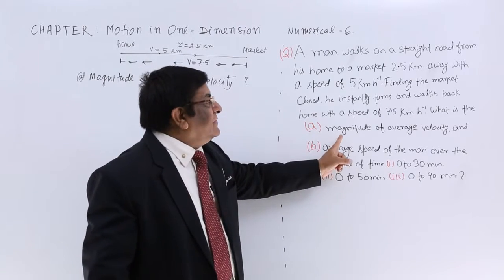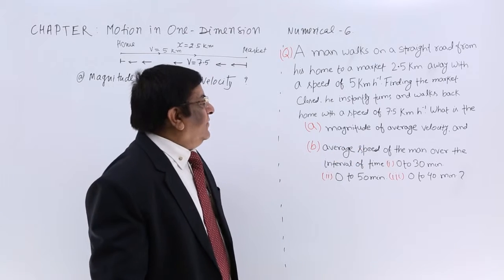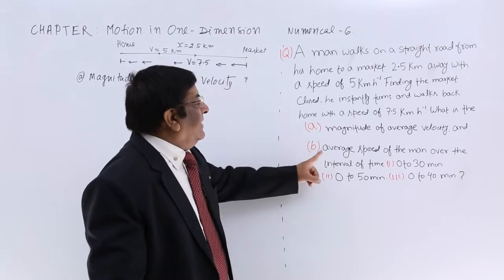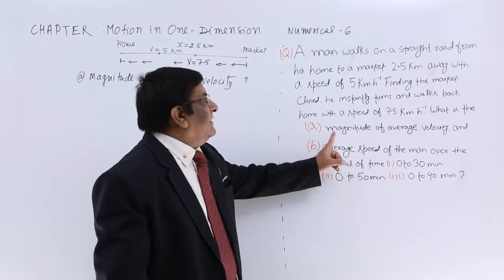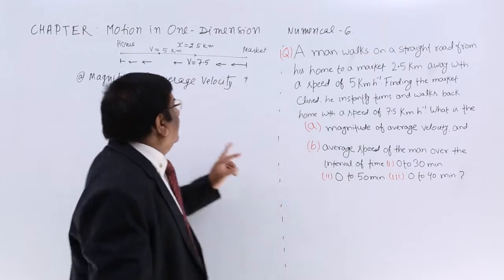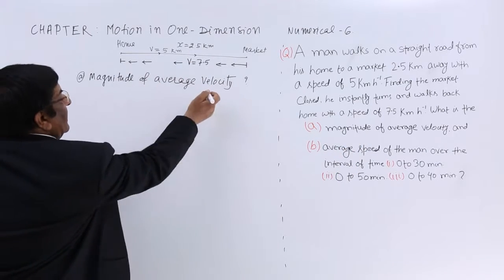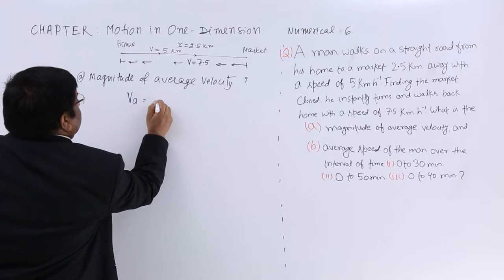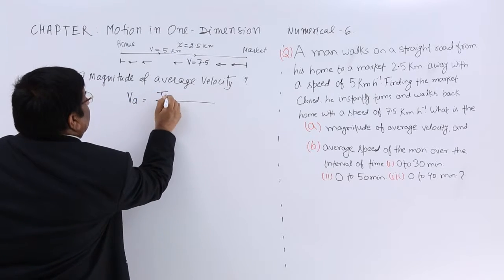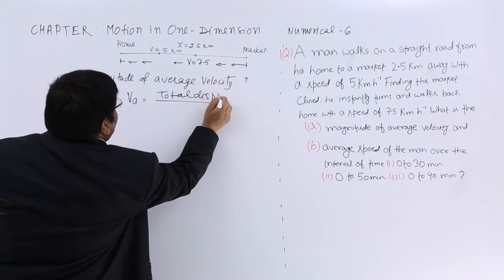Now we have to do certain calculations. We have to find the magnitude of average velocity and average speed. For average velocity, the formula is: average velocity equals total displacement divided by total time.